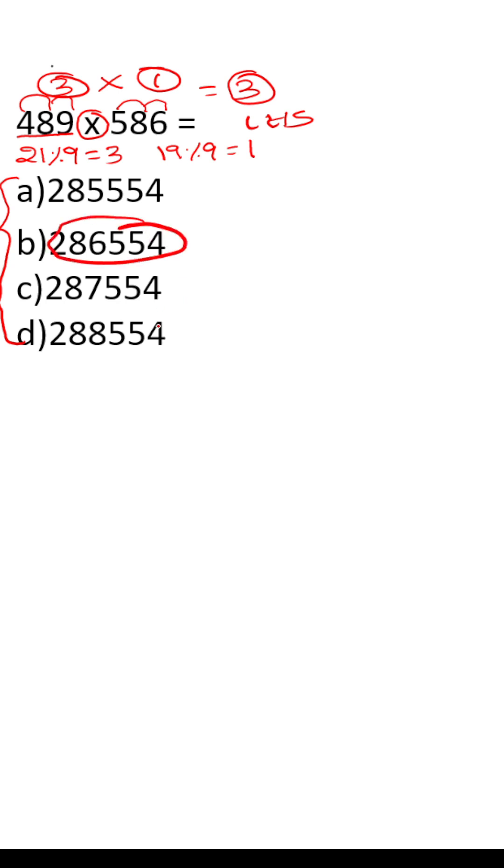Why are we calculating the digit sum? Let me explain. Take a number 586. 586 can be broken down into 500 plus 80 plus 6.